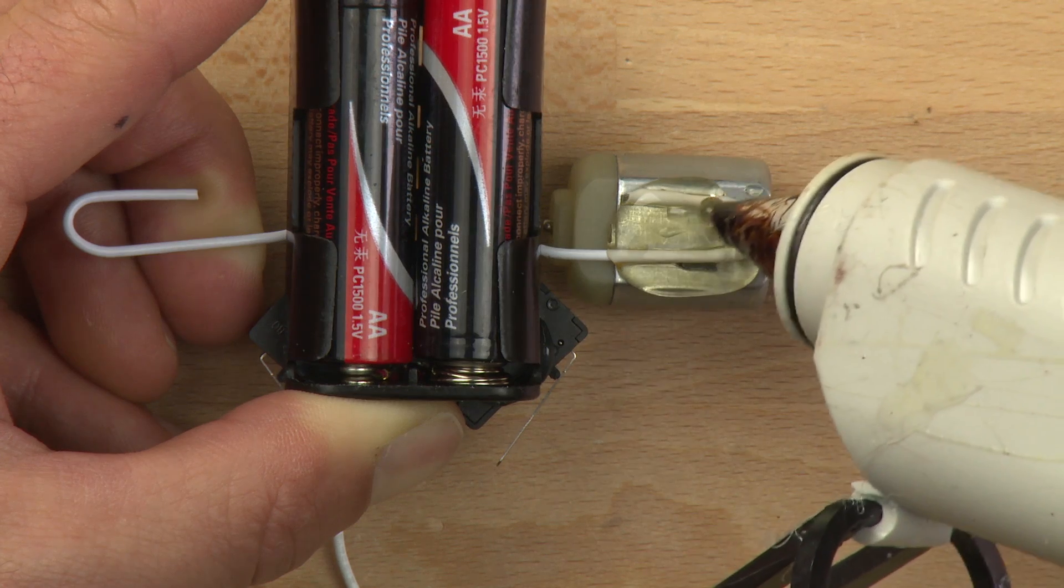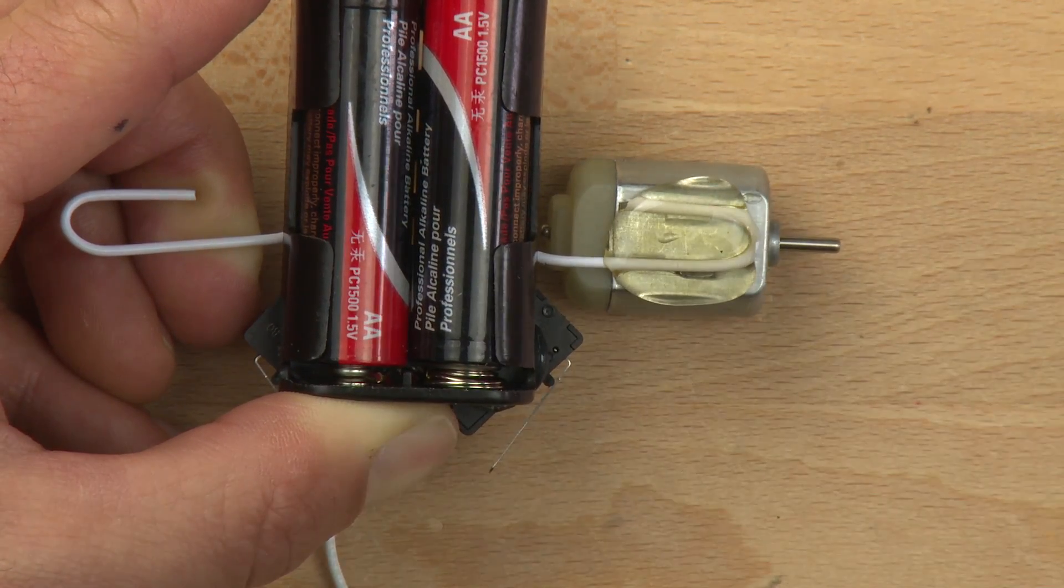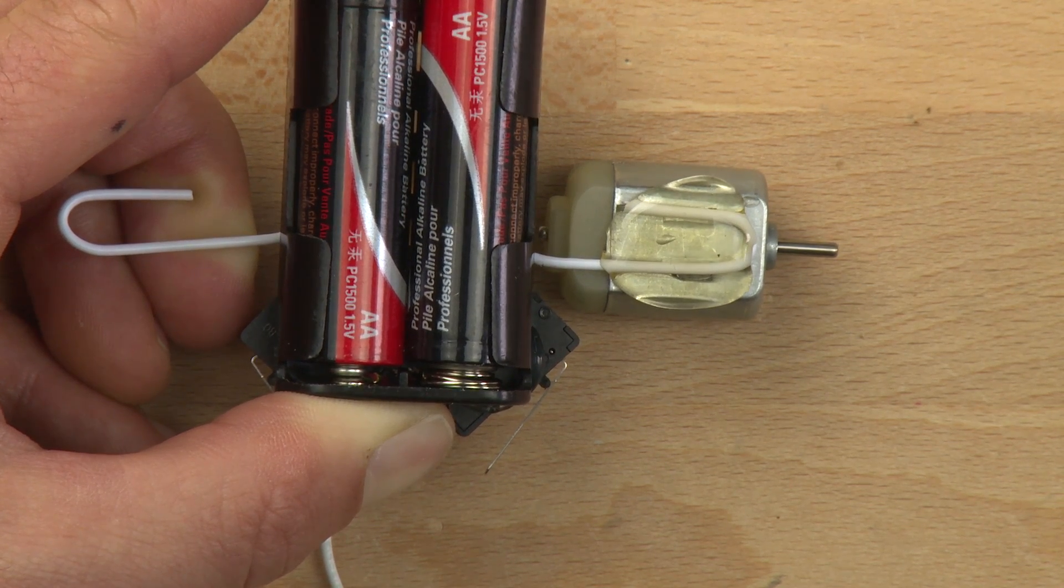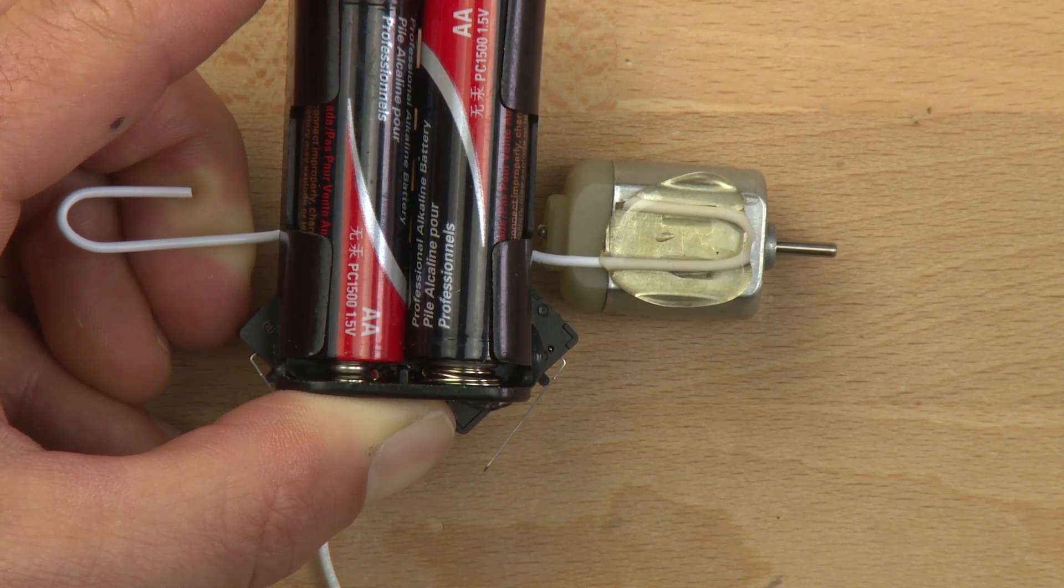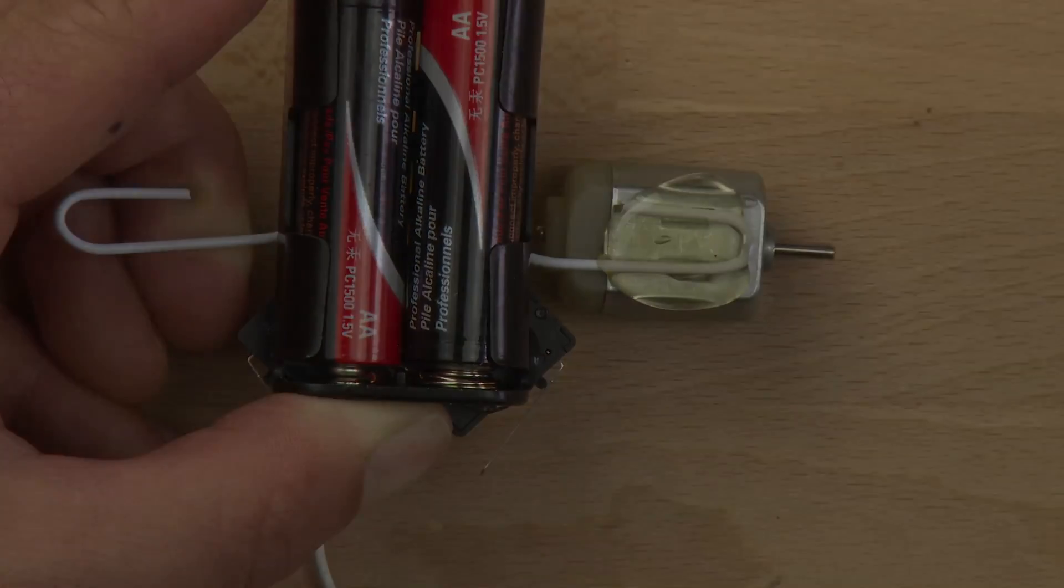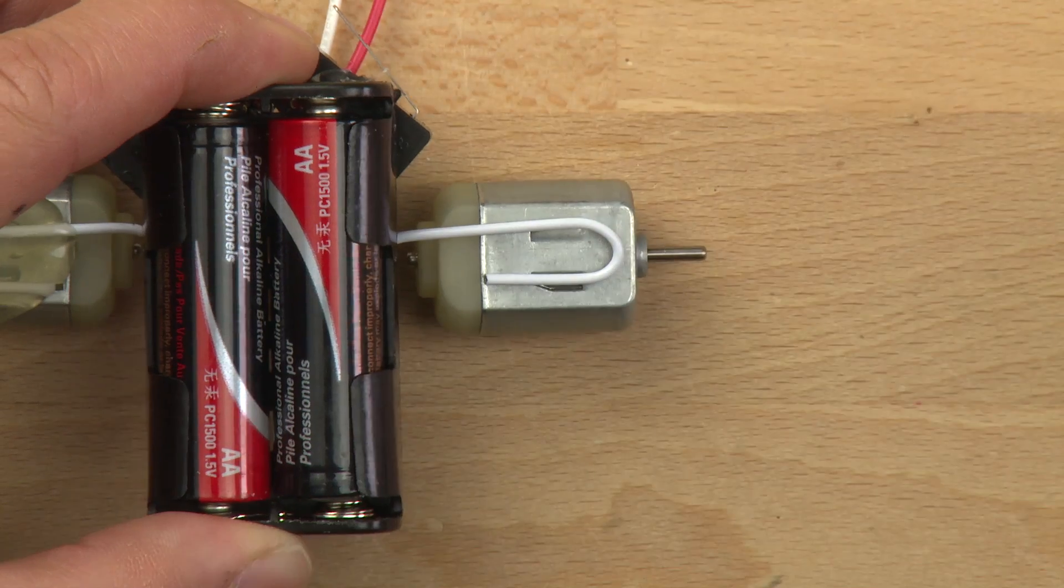The good thing about the hot glue in this situation is that it will dry a lot quicker than when it was on top of the battery holder, because the metal of the motor will act as a heat sink. You want to do the same exact thing for the other side.